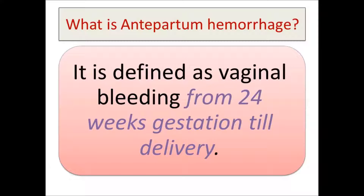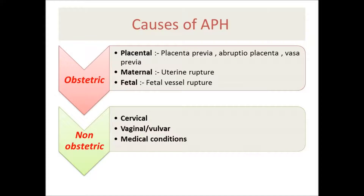After 24 weeks gestation until delivery we call it antepartum hemorrhage, and after delivery it is called postpartum hemorrhage. Antepartum hemorrhage is quite common — it affects about 3% of pregnancies — and it is a major cause of maternal mortality and can also affect the fetus. The main causes are divided classically into two groups: obstetric causes, which are related to the pregnancy, and non-obstetric causes, which are not related to pregnancy.